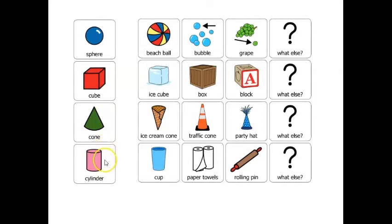The last object you're going to look for is shaped like a cylinder. Objects that are shaped like a cylinder are cups, paper towels, and a rolling pin. Can you find any of these objects in your house? If not, what else can you find that's shaped like a cylinder?